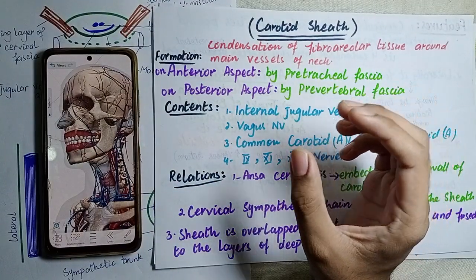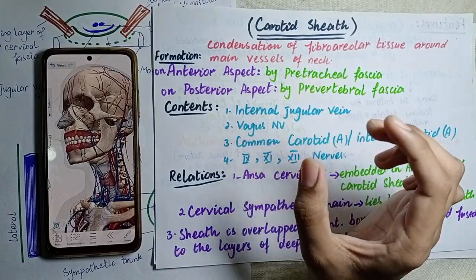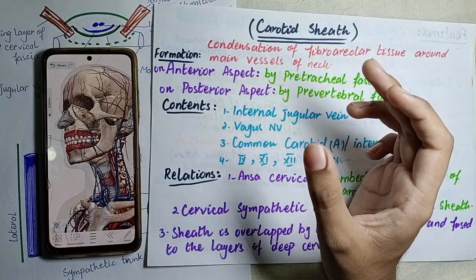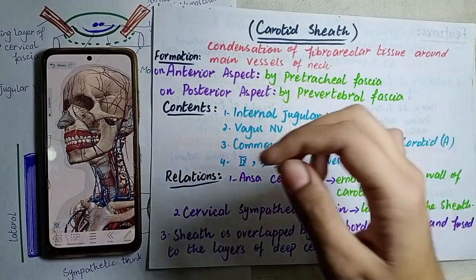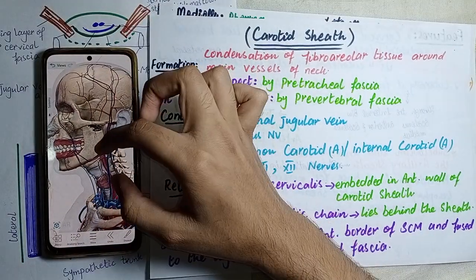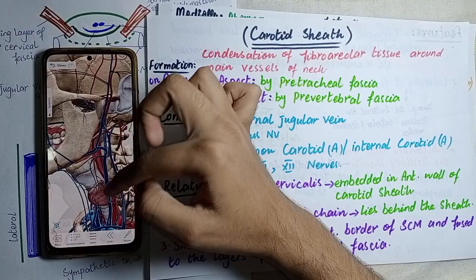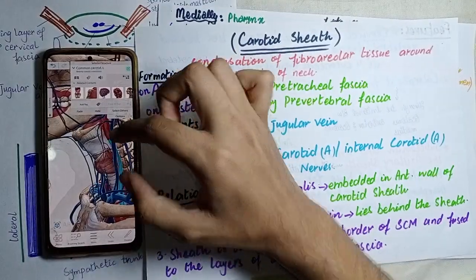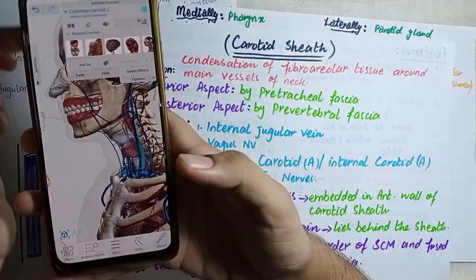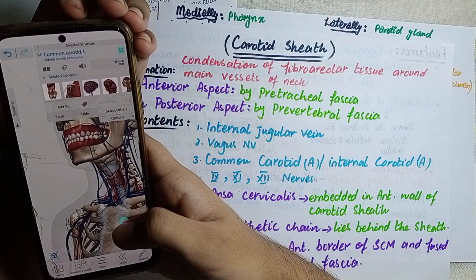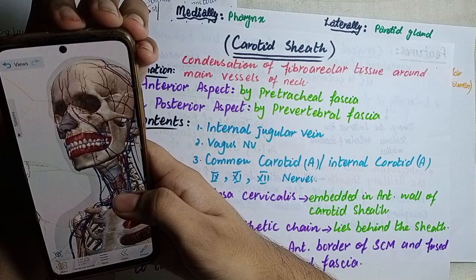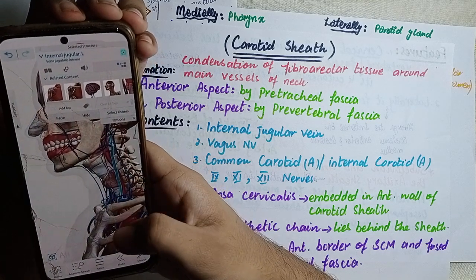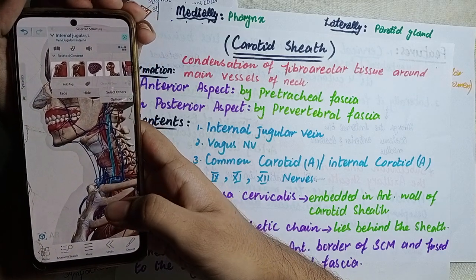When we talk about the neck region, the main vessels are covered by a sheet that is made from condensation of the fibroalveolar tissue. We call that the carotid sheath. In the neck region, the main vessel is called the carotid artery — specifically the common carotid artery, which is a direct branch of the arch of the aorta. This common carotid artery is covered by the carotid sheath. We also have the internal jugular vein, which is enclosed by the carotid sheath.